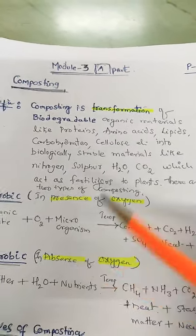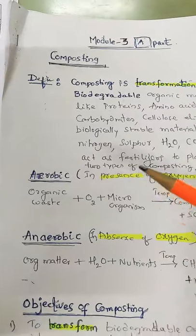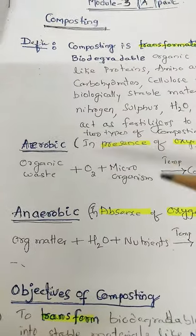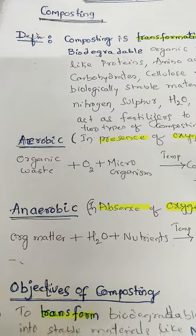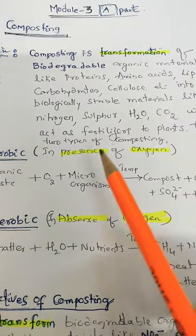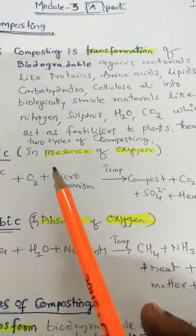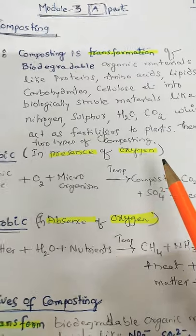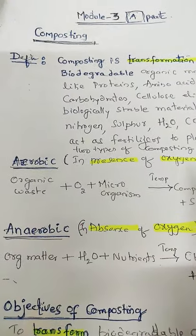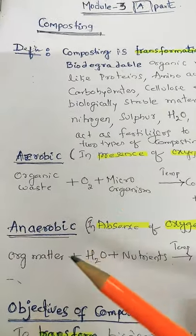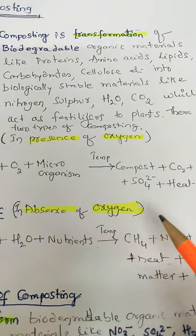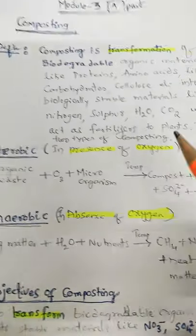There are two types mainly. The conversion is done in two types. One is called aerobic — aerobic means it is in presence of oxygen or in presence of natural air. Then anaerobic — it is in absence of oxygen.